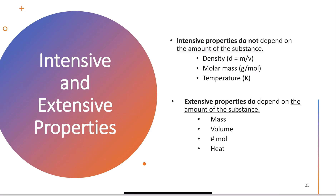Intensive properties will come back throughout all of chemistry. Many intensive properties, such as density and molar mass, can actually help me identify species — meaning what molecule or compound it is, what it is made of.